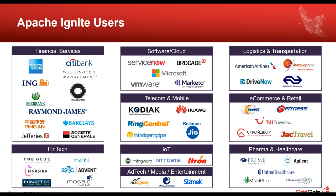Our customers are organizations that have very stringent latency requirements and do massively parallel processing as part of their business. Some of these customers have hundreds of Ignite nodes in deployment and are processing millions of transactions per minute in aggregate. Typical customers include financial services, cloud operators, telecom, network management, logistics — it's a very broad user base.